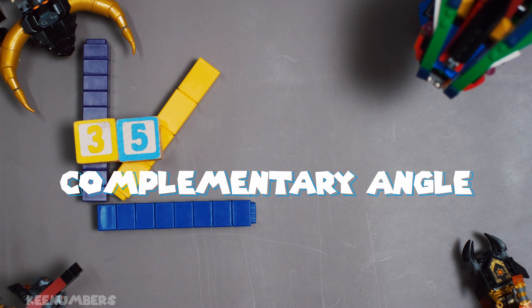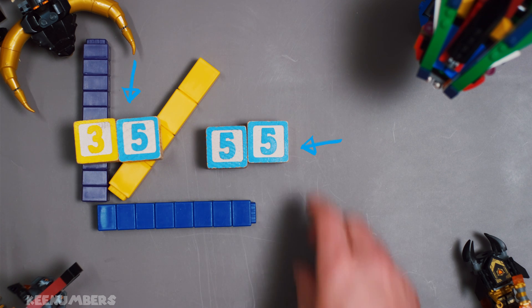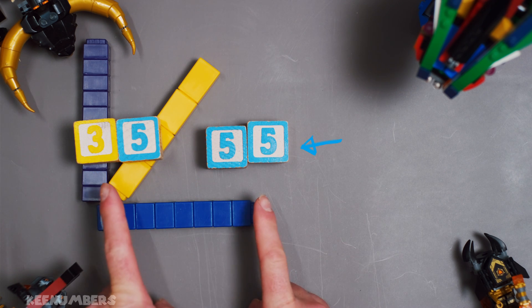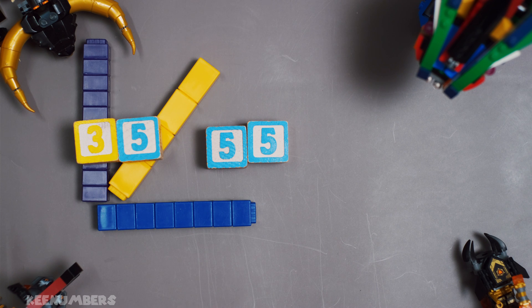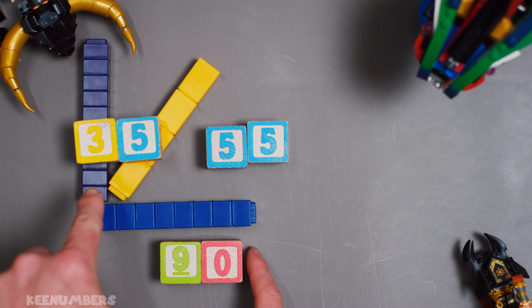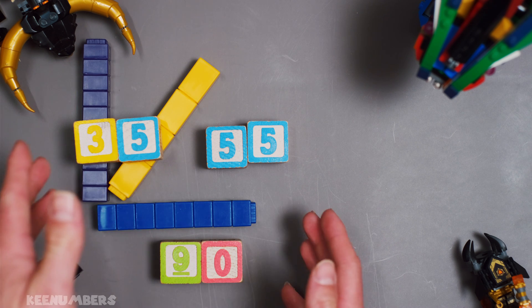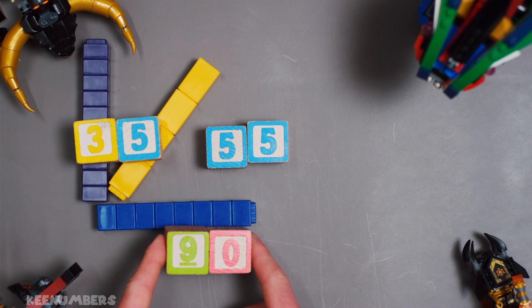35 compared to this first guy, 55 degrees. Yep. You add those two together, you're going to get 90 degrees, which is the perfect right angle. That's what a right angle is. It's 90 degrees.